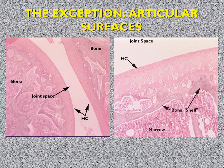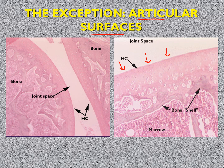At the articular surface of hyaline cartilage, there is no perichondrium. This is clinically important: when the articular surface is damaged, healing is very poor because healing depends on blood supply. Wherever blood supply is large, healing is faster; when blood supply is low, healing is very slow and repair may occur by fibrous or scar tissue instead.